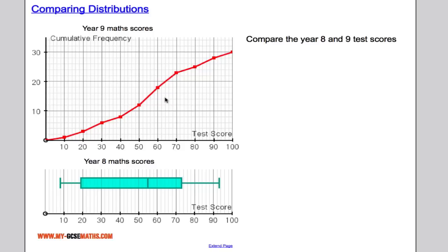And like I said before, you're going to want to comment on an average and a range. So the first thing I'm going to do is go to my cumulative frequency curve and work out what the median is, the upper quartile and lower quartile.